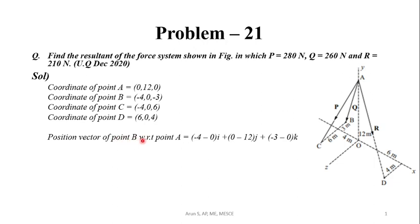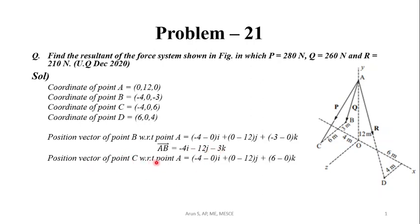For the position vector of B with respect to point A, we subtract the A coordinate from the B coordinate. That is: (-4 - 0)i + (0 - 12)j + (-3 - 0)k. So we get vector AB as -4i - 12j - 3k. Similarly, for the position vector of point C with respect to point A, that is C coordinate minus A coordinate: (-4 - 0)i + (0 - 12)j + (6 - 0)k. So we get vector AC as -4i - 12j + 6k.